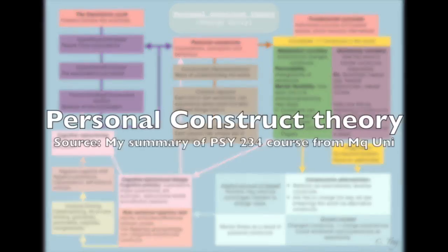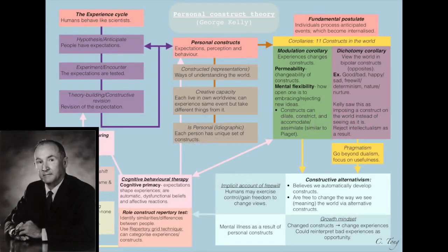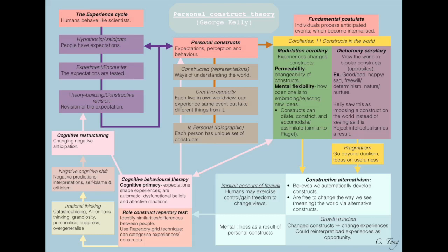George Kelly proposed a personal construct theory which was both humanistic in that it started with the person, with the individual, emphasizing the uniqueness of the individual, which is known as the ideographic approach. Kelly's personal construct theory had a cognitive emphasis which wanted to explore the phenomenology or subjective experiences and personal meaning, the way people process and understand these events.